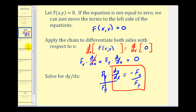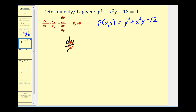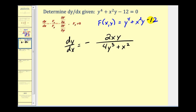Let's look at some examples and compare to the method from calculus one. We want to determine dy/dx for this implicit equation, which is already equal to zero. So f(x, y) = y⁴ + x²y - 12. Applying the formula, dy/dx equals the negative of the partial with respect to x over the partial with respect to y. Treating y as a constant, the numerator is 2xy. The denominator is 4y³ + x². It's a quick, easy process.